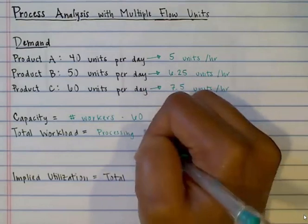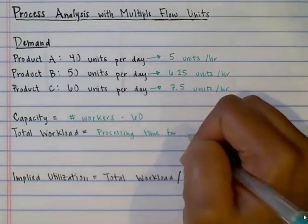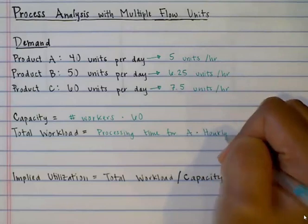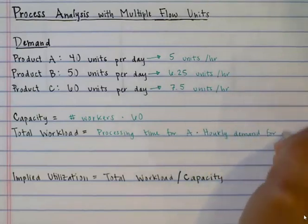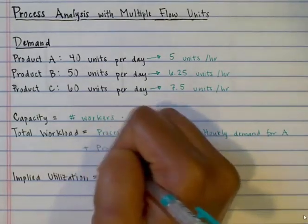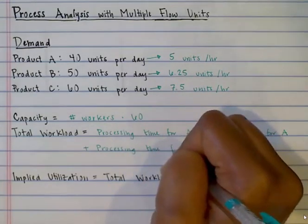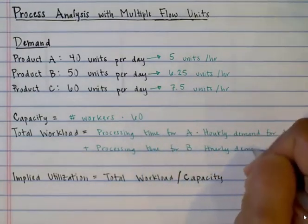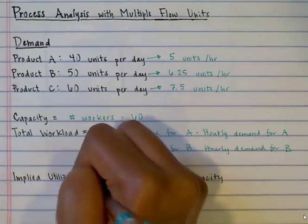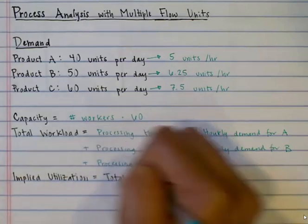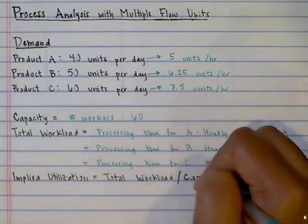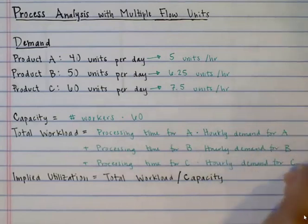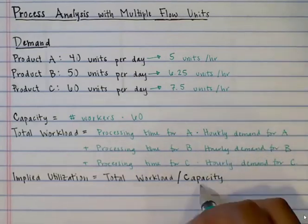The total workload is the processing time for product A times the hourly demand for product A, plus the processing time for product B times the hourly demand for product B, plus the processing time for product C times the hourly demand for product C. Once we have the capacity and total workload, we can calculate the implied utilization, which is simply total workload divided by capacity.